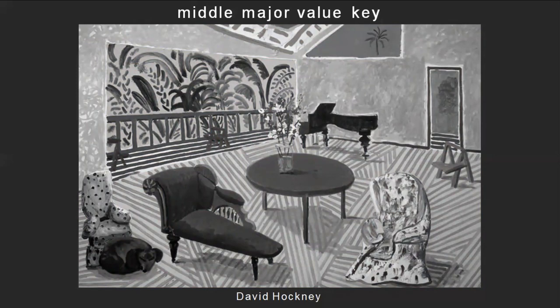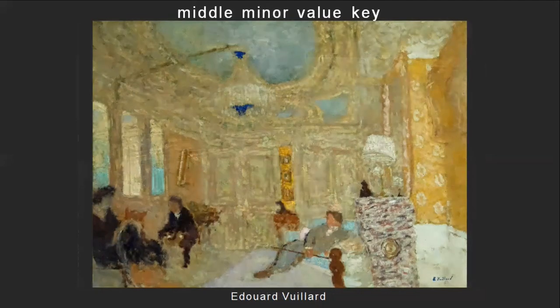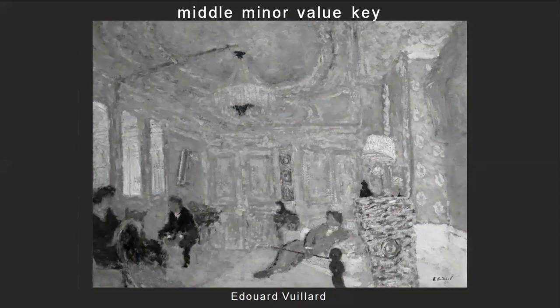Now let's move on to another kind of interior in the minor key. This is a painting by Édouard Vuillard, an Impressionist painter. There are some darker spots and some lighter spots, but mostly across the board — especially when we look at it desaturated — you can see that the tone moves all the way across the image, a very minor shift in tonality from one extreme to the other. It doesn't allow for dark darks, and it doesn't allow for light lights. Most of it is composed of this middle gray moving all the way across it.